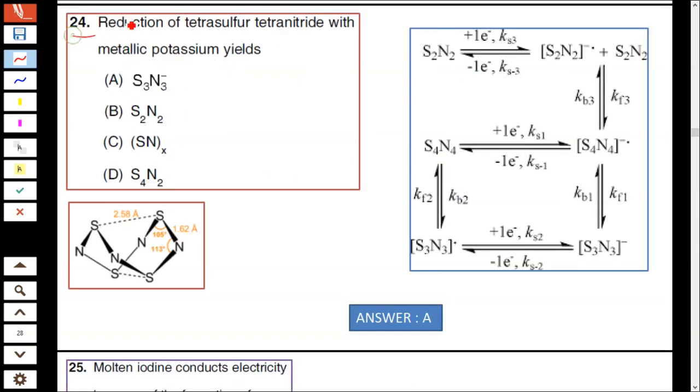Question number 24: Reduction of tetrasulfur tetranitride with metallic potassium yields S₄N₄. Reduction gives S₂N₂⁻, and further reduction gives S₄N₄⁻, which on reduction gives S₃N₃⁻. Hence option A is correct. This is the structure of S₄N₄.